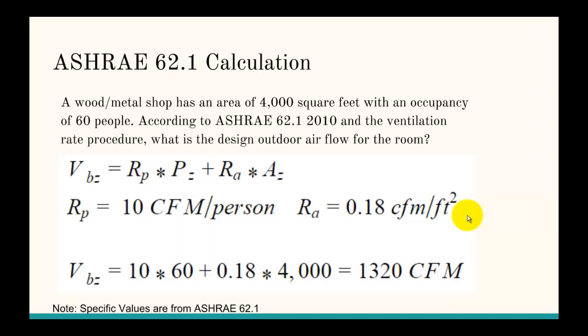Let's look at this problem. If a wood or metal shop has an area of 4,000 square feet with an occupancy of 60 people, let's see what the ventilation rate would be using the ventilation rate procedure and what the design outdoor air flow would be for the room.